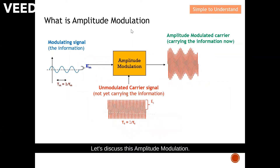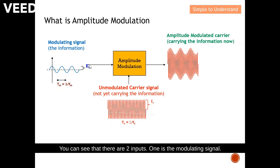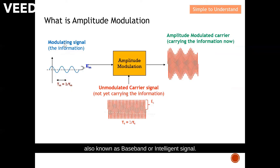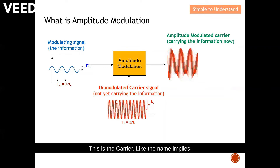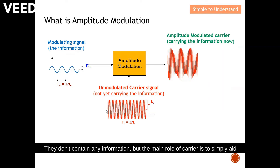Let's discuss this amplitude modulation. Right in the middle of this page is the amplitude modulation block. You can see there are two inputs. One is the modulating signal, also known as the baseband or intelligence signal — this is the information that we want to send over to the recipient. The other input is the carrier. As the name implies, the carrier is used to help carry the information over to the recipient. The carrier doesn't contain any information; its main role is simply to carry the modulating signal to the recipient.